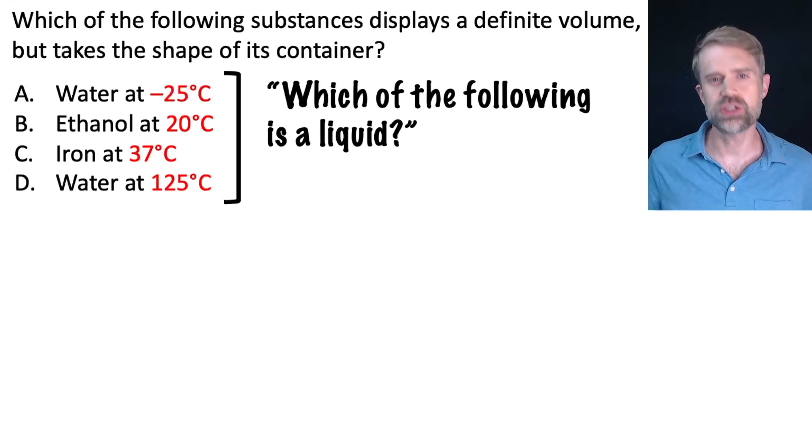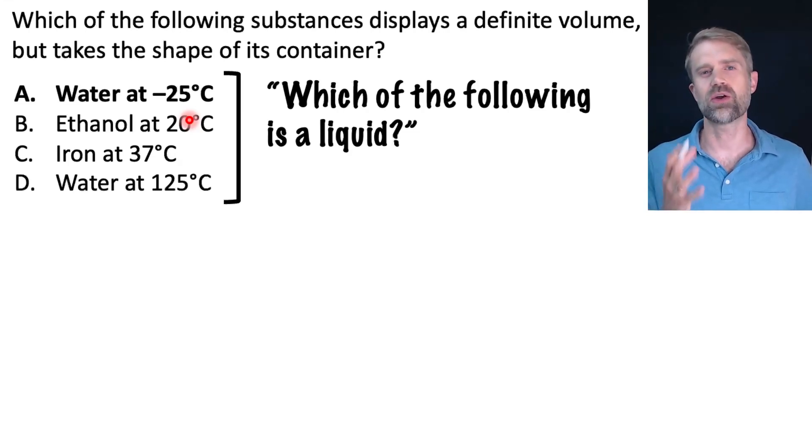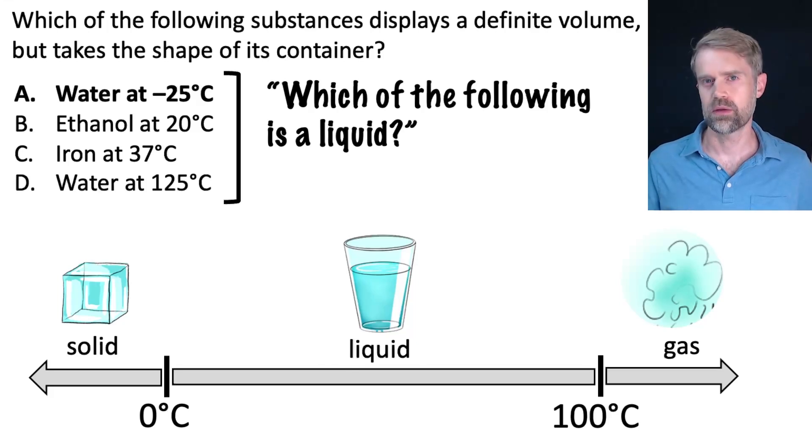Let's think through each choice. Choice A, water at negative 25 degrees Celsius. Now, what state of matter is water at negative 25 degrees Celsius? Well, for water, there are two very important temperatures to know, 0 degrees Celsius and 100 degrees Celsius. Below 0 degrees Celsius, water is a solid, it's ice. Since we're looking for a liquid, we can cross this off because water is solid, water is ice, at negative 25 degrees Celsius.